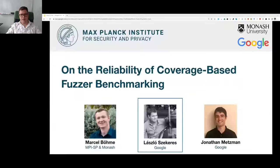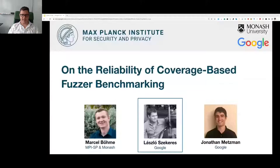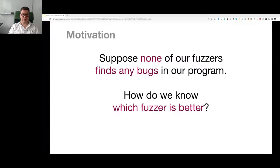I'm Laszlo from Google. I'm going to talk about the reliability of coverage-based fuzzer benchmarking — joint work with Marcel from Max Planck Institute and Jonathan from Google. The problem we're dealing with is how to evaluate fuzzing tools. Suppose you run a bunch of different fuzzers on a program and none find any bugs. How do you decide which fuzzer is better? Which one has the highest potential to find bugs? The typical answer is to measure code coverage — the fuzzer that exercises more code should be better.